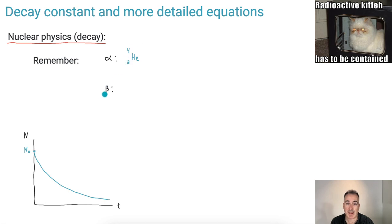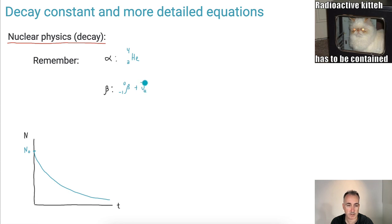We've got beta decay, and there are two different kinds. There's beta minus. If you have this one, you always get something else — you always get a neutrino. It's an electron neutrino; specifically, you get an anti-electron neutrino. So beta minus gives you an electron plus an electron anti-neutrino.